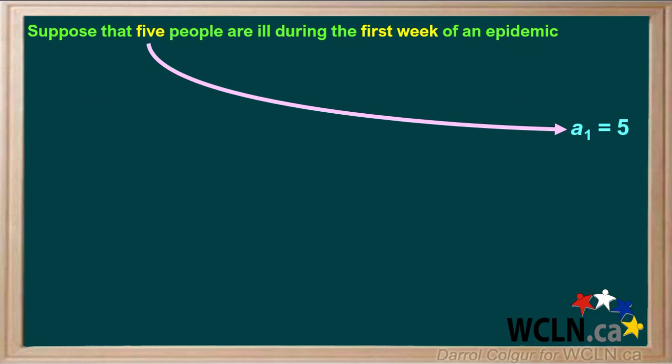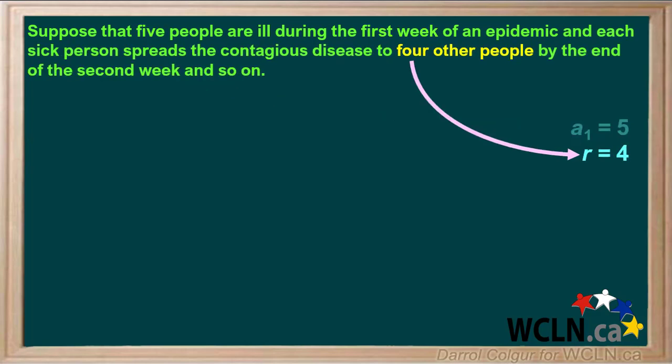Because five people are ill during the first week, we can state that the first term A1 is equal to five. Because each person infects four other people each week, the number of newly infected people in a particular week is four times the number of infected people in the previous week. Therefore we can say the common ratio R is equal to four.